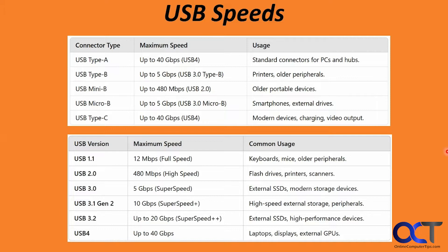Here we have a breakdown of the connector types with their speeds and common usage applications. Type-A goes up to 40 gigabits per second — that's gigabits, not gigabytes. Type-B up to 5 gigabits per second. Mini-B at 480 megabits per second. Micro-B at 5 gigabits per second for USB-3. And Type-C up to 40 gigabits per second.